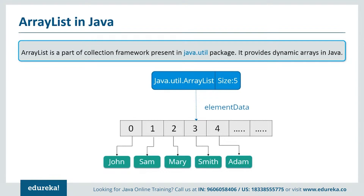Some key points to note here: ArrayList is initialized by a size; however, the size can increase if the collection grows or shrink if objects are removed from the collection. Next, ArrayList allows us to randomly access the list. And ArrayList cannot be used for primitive types like int, char, etc. To access those, we need a wrapper class for such cases.